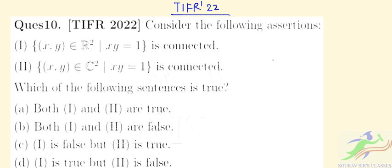In question number 10 it is given: consider the following assertions. Statement I: {(x,y) ∈ ℝ² | xy = 1} is connected. Statement II: {(x,y) ∈ ℂ² | xy = 1} is connected. We have to find which of the following sentences is true.